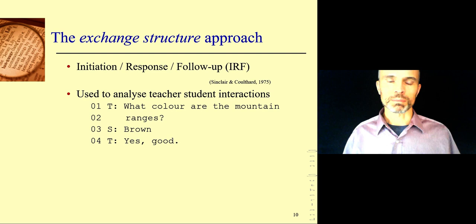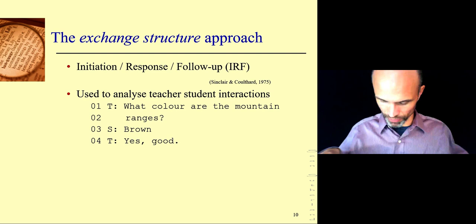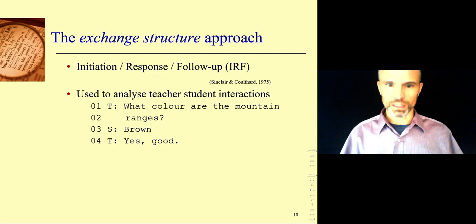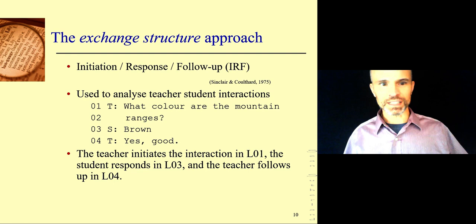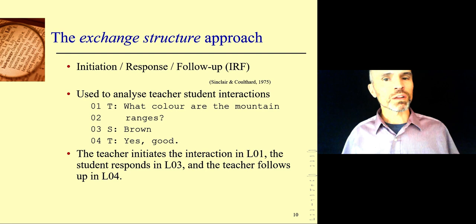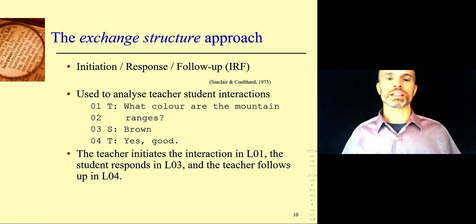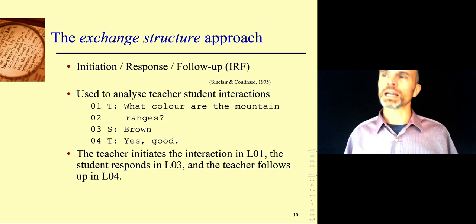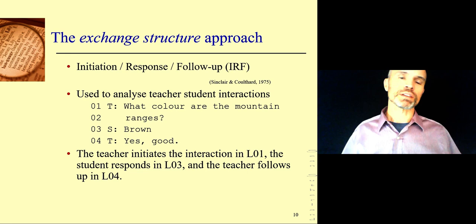Teachers and students are talking. The teacher says, what color are the mountain ranges? They're looking at a map — the child is learning to read a map, blue is ocean, green are forests, and so on. The student says brown. The teacher says yes, good. You have the initiation in line one — the teacher starts this little interaction. The student responds in line three with brown, and the teacher follows up. Or sometimes the follow-up is called evaluate — initiation, response, evaluate. That looks more applicable here because the teacher evaluates the student's answer. Because imagine if the student was wrong and said blue — then the teacher would evaluate differently and say, hmm, look again, those are the oceans.